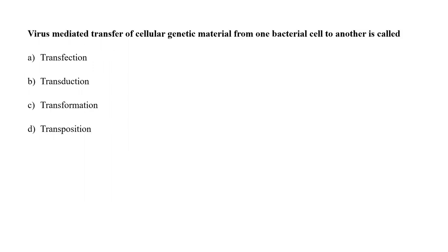Virus-mediated transfer of cellular genetic material from one bacterial cell to another is called A. Transfection, B. Transduction, C. Transformation, or D. Transposition? Transfection is the introduction of DNA, RNA or antibodies into eukaryotic cells. Transformation refers to the uptake of DNA from the environment by a bacterial cell. Transposition is the transfer of a DNA segment from one site to another in the genome. Transduction means transfer of cellular genetic material from one bacterial cell to another via a virus. So the correct answer is option B.